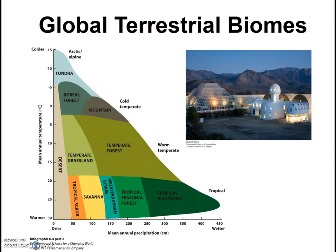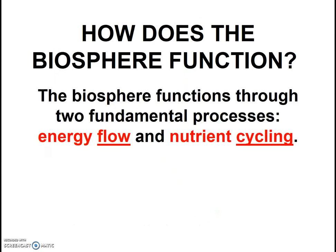They tried, but they failed. As they were picking the biomes and the species within those biomes, they always had to keep in mind the function of the entire biosphere. So how does the biosphere function? It functions primarily through two fundamental processes: energy flow and nutrient cycling.